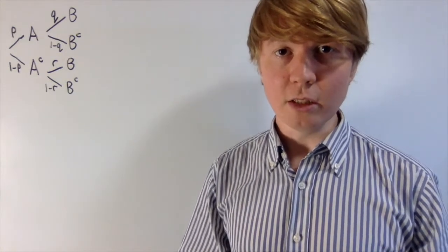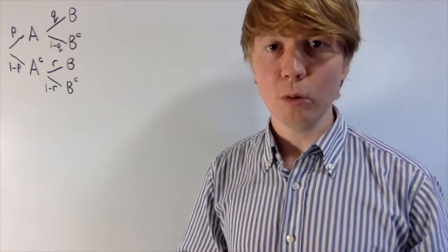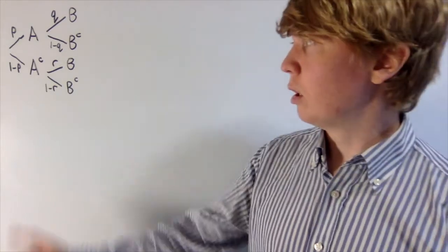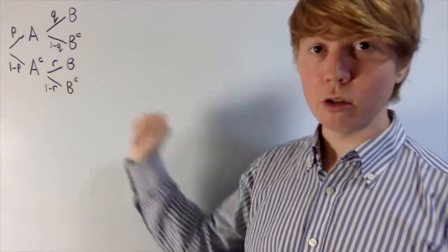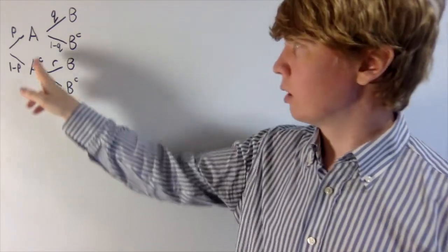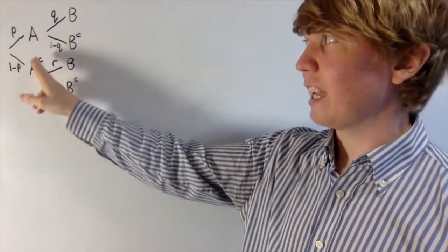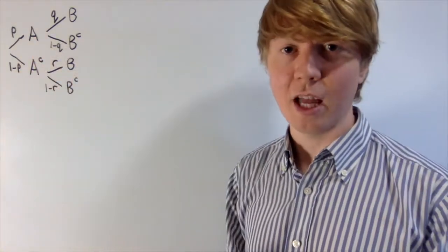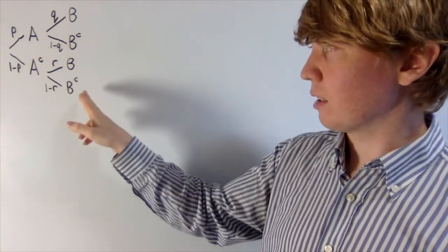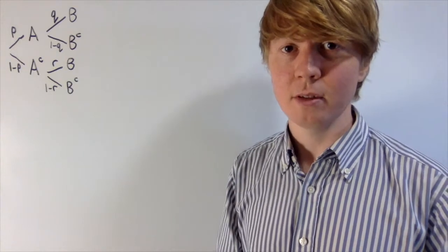We're going to have a look at probability tree diagrams, and essentially the problem we're going to look at is how to reverse the order of a probability tree. So here we've got a probability tree set up so that A happens or doesn't happen first, and then it gets decided whether or not B happens.